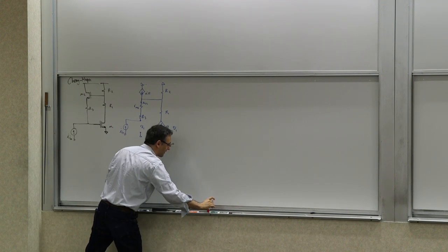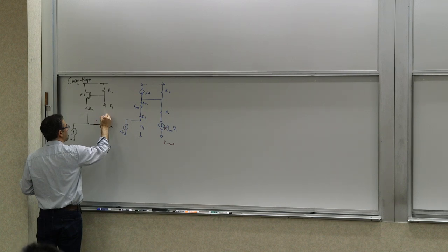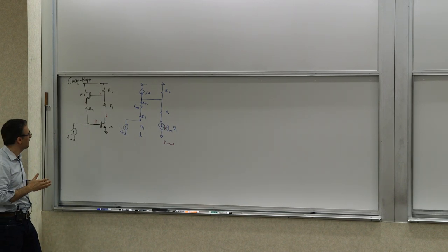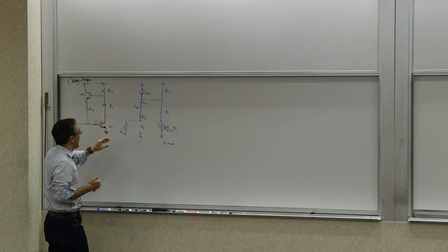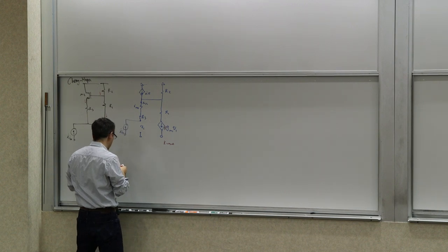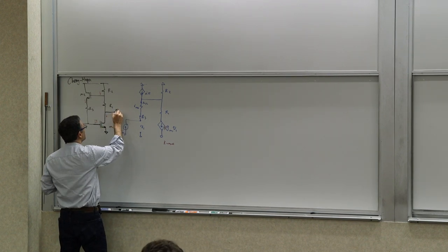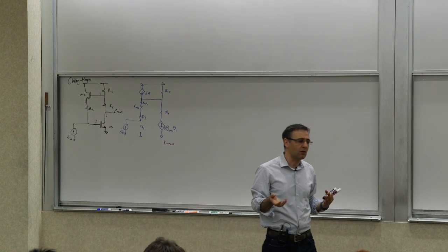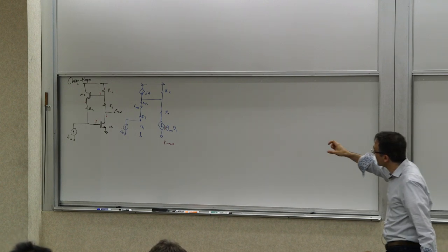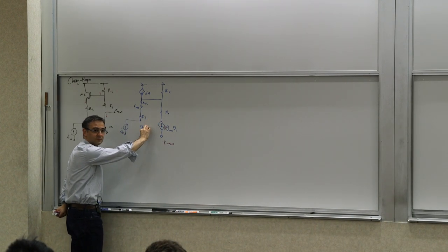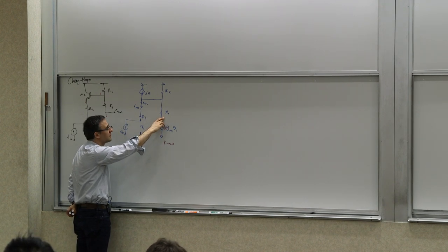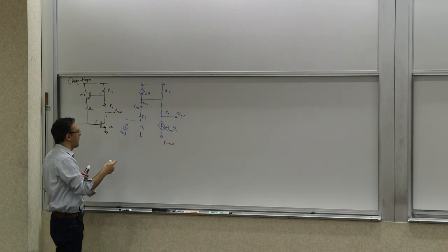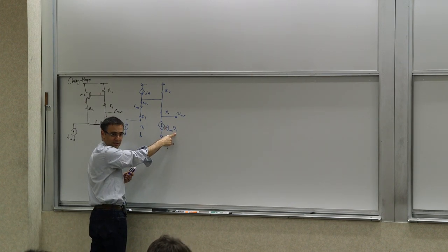In negative feedback, to have a finite output with an infinite K, the asymptotic equality principle tells us that the input V1 has to be zero. Because if you want to get finite current and a finite output voltage with K being infinity, then V1 has to be zero asymptotically. That means these two voltages have to be equal, which means there's no current flowing through this node.